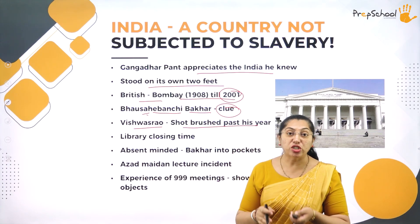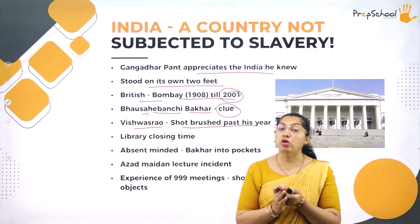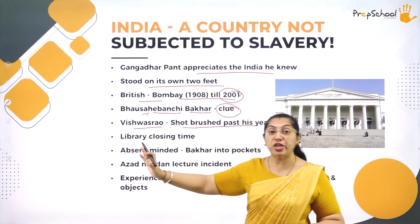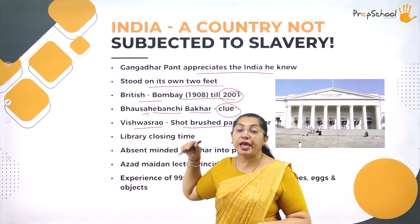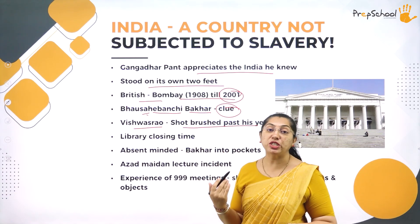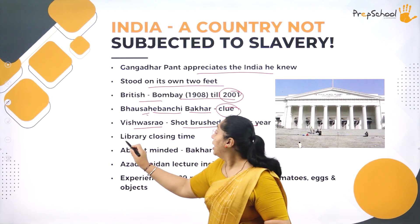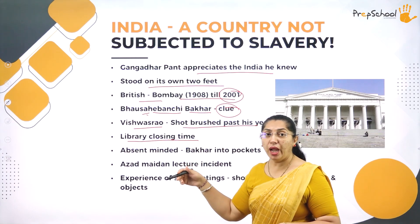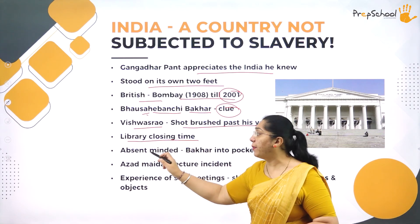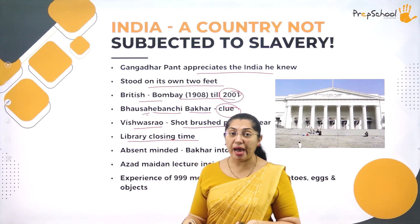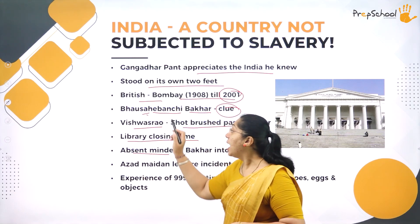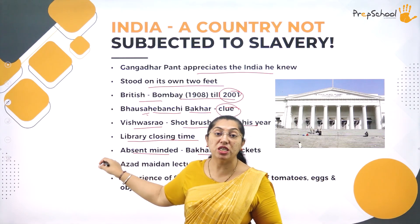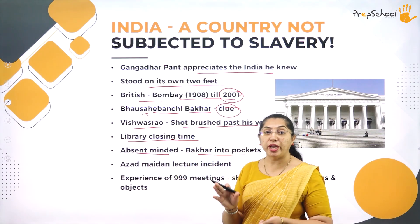But in reality — in the book written by Gangadhar Pant himself, since he is also a professor who has written history books — Vishwas Rao is already dead. When the library's closing time arrives, as he was reading this last line about the bullet brushing through Vishwas Rao's ears, the librarian says it is closing time. In a hurry and absent-minded, Gangadhar Pant accidentally puts Bahusaheb Banchi Barkar's book into his pocket and leaves the library.